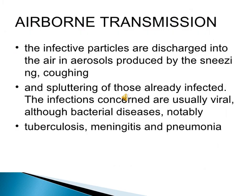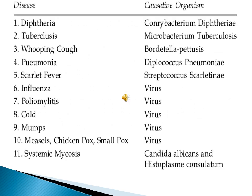Airborne transmission is usually caused by infected particles discharged into the air as aerosols produced by sneezing or coughing. The diseases are usually viral, although some bacterial diseases such as tuberculosis, meningitis, and pneumonia are also caused by airborne transmission. This slide shows some airborne diseases.